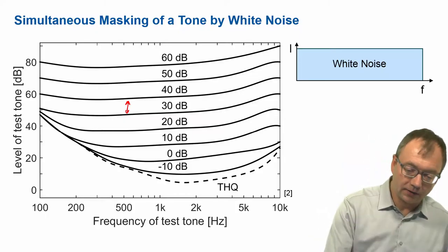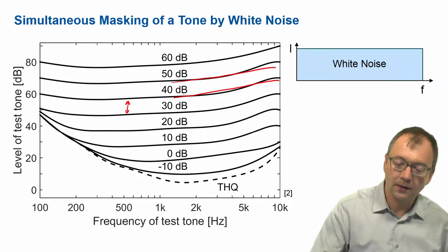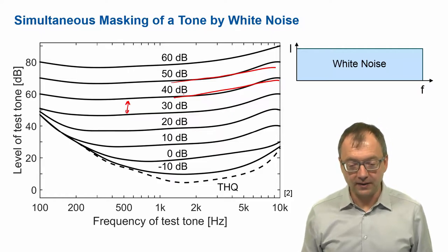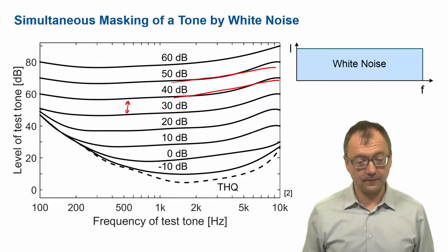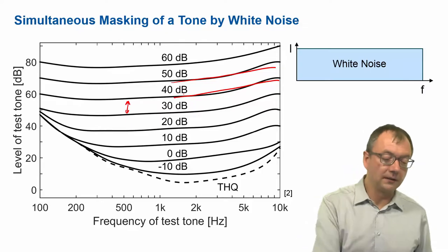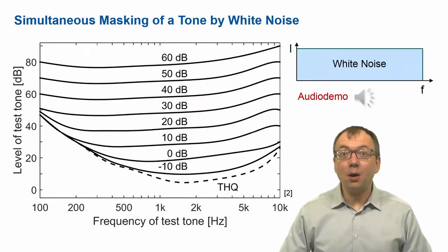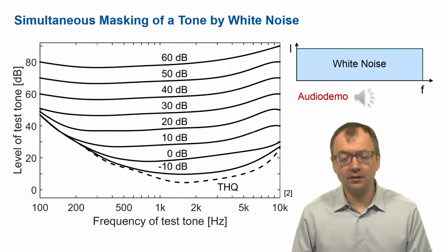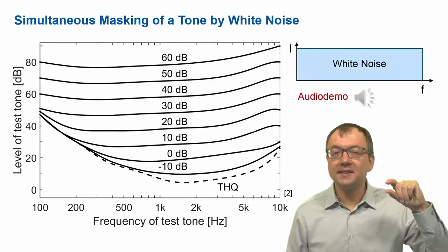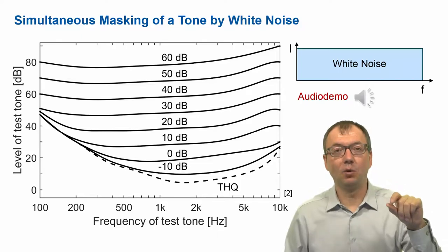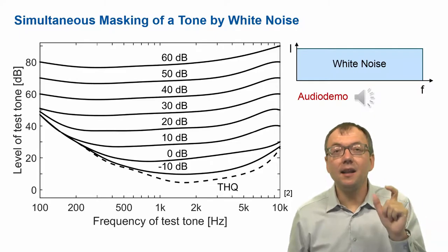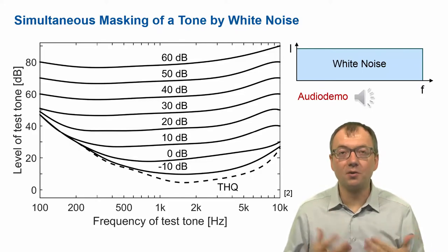Towards higher frequencies there is a slight rise in the masking curve because our auditory filters get wider towards higher frequencies — something we will cover later in the chapter on frequency selectivity and critical bands. So wide noise can mask a tone and raise its threshold across the whole spectrum, here from 100 Hz to 10 kHz. In the audio demonstration, a white noise is played with a tone whose level is reduced step by step until it becomes inaudible — masked by the noise — though when played alone the tone is still there.